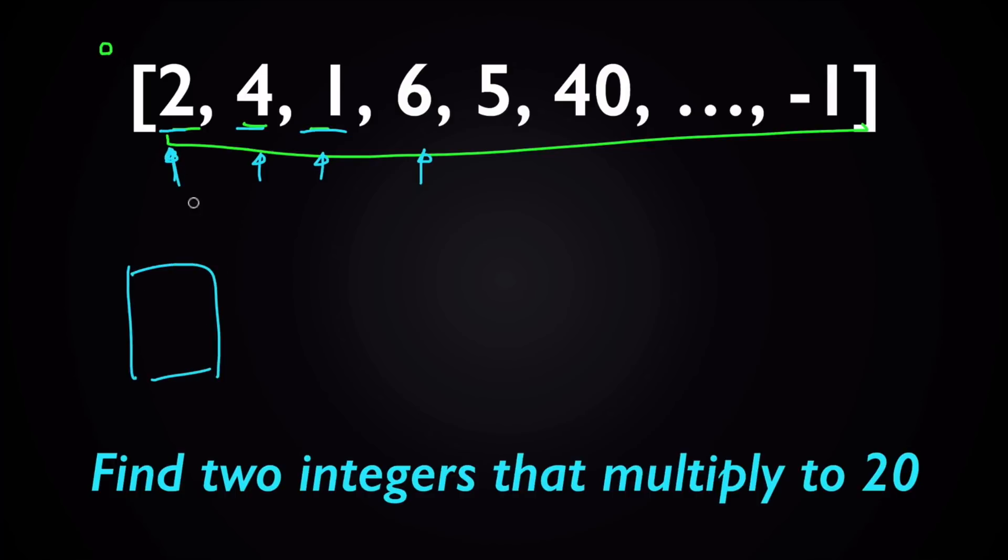So when we see two, write down two right here. And when we see four, write down four and so on. And whenever we see a new number, for example five right here, I would ask myself, what's the number that would multiply to 20 with five? The answer is of course four.